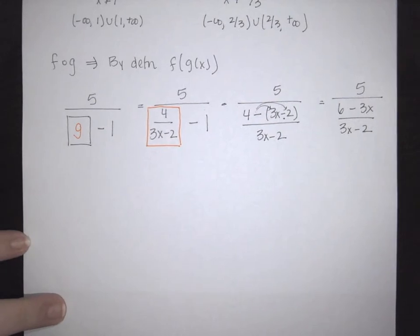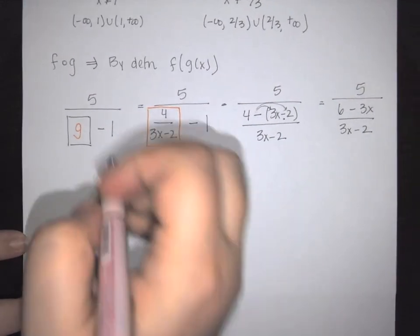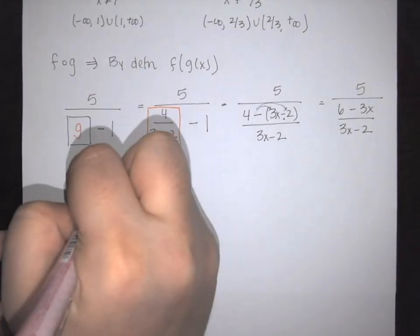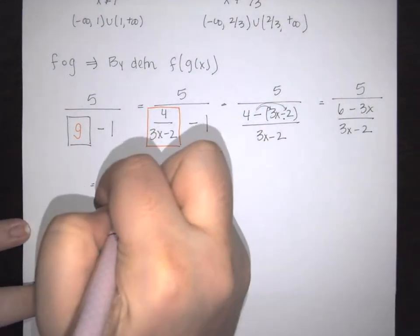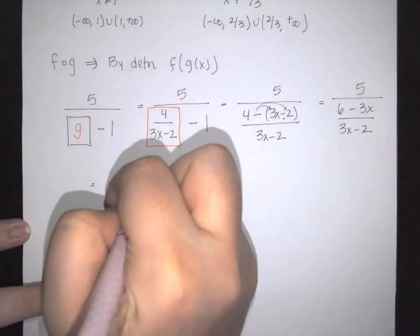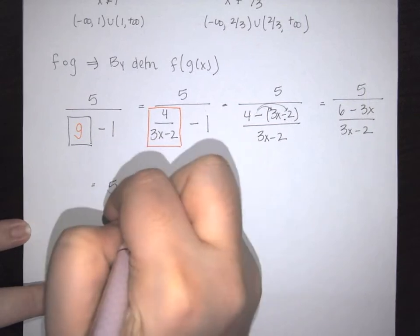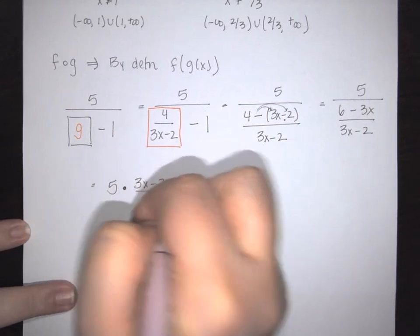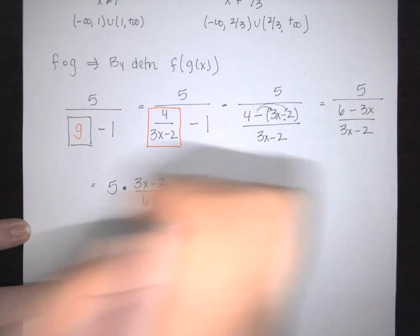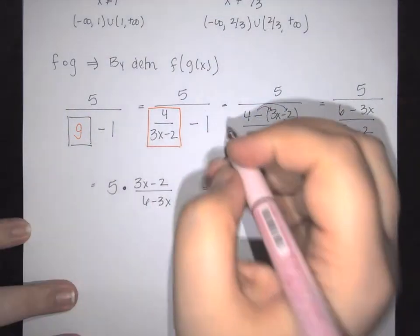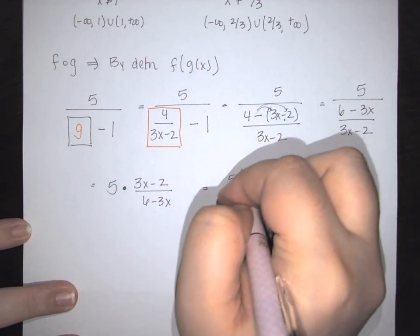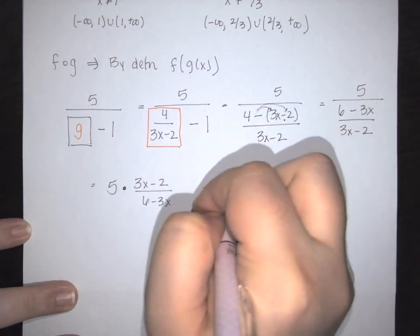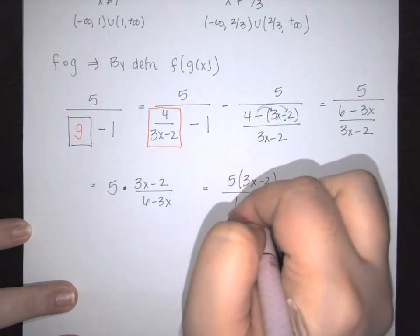We need to use our rules which then say we're going to keep the top, change the sign to multiplication, and flip the reciprocal of the bottom. So this becomes 3x minus 2 over 6 minus 3x. And the very last thing that we're going to do is put it all together. So this becomes 5 times my 3x minus 2, and the whole thing is over 6 minus 3x.